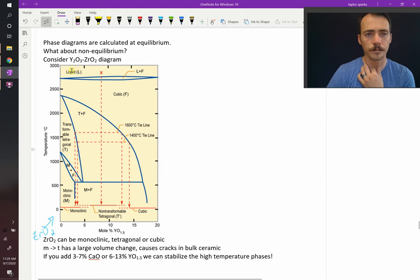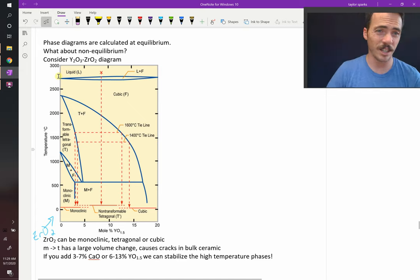Up top, you've got your liquid phase, so you can melt zirconia. It is extremely refractory, very high melting point, almost like 2700 or so, 2700 Celsius. That's extremely hot.